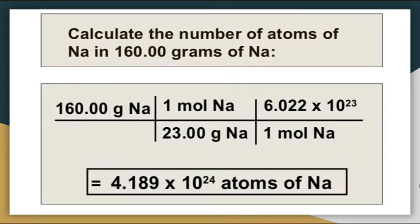Example number 1: Calculate the number of atoms of Na in 160 gram of sodium. We are given a mass of 160 gram and we have to calculate the number of atoms. This will be solved in two steps. In step 1, we convert the mass into number of moles. Then, in step 2, the number of moles will be converted into number of atoms.